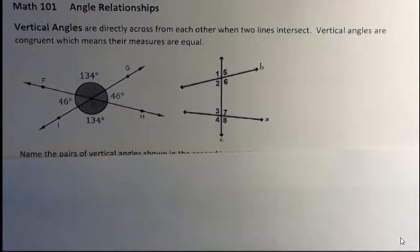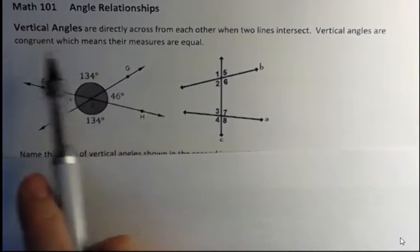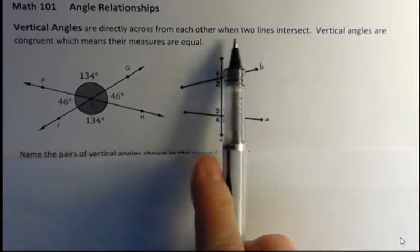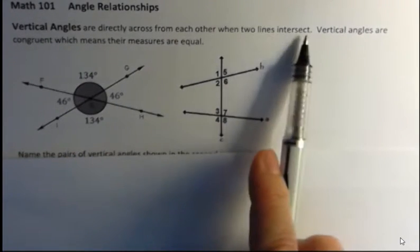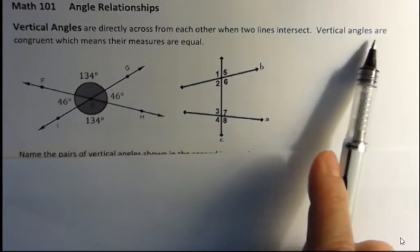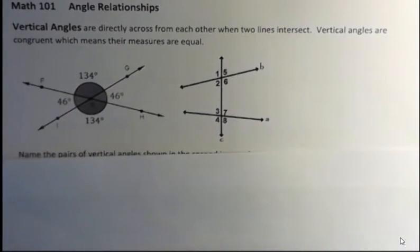Hello, it's Carly McEvoy. Today I'm talking about angle relationships. The first relationship we're going to talk about are vertical angles. Vertical angles are directly across from each other whenever two lines intersect. Vertical angles are congruent, which means their measures are equal.